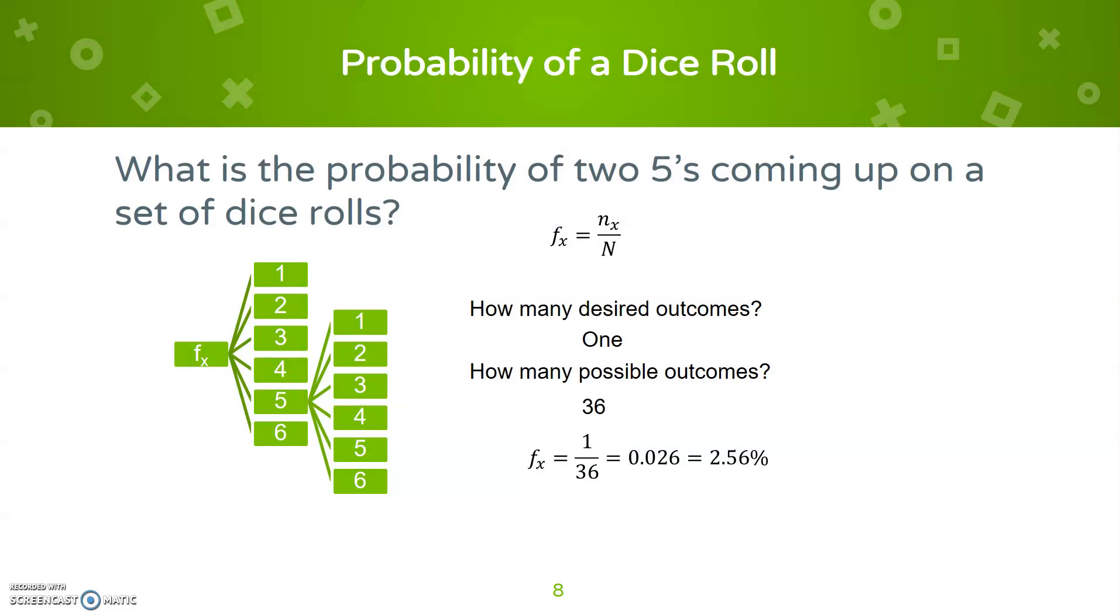But what happens if you add a second dice into it? We can look at what is the probability of two fives coming up on a set of dice rolled. Well, the first die rolled is a one-sixth chance, and the second is another one-sixth chance. So there's only one possible combination that can occur.